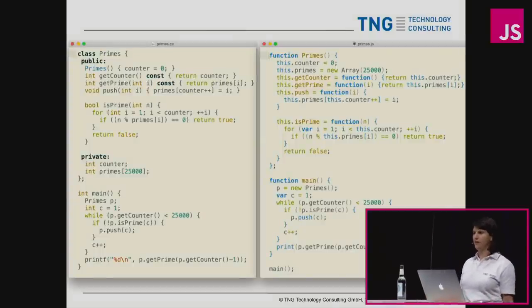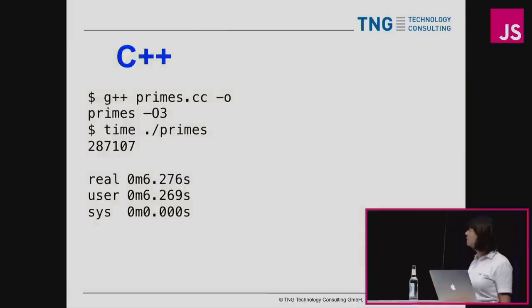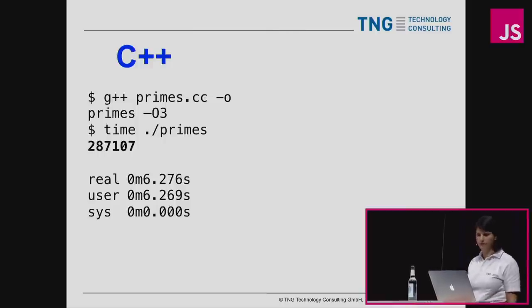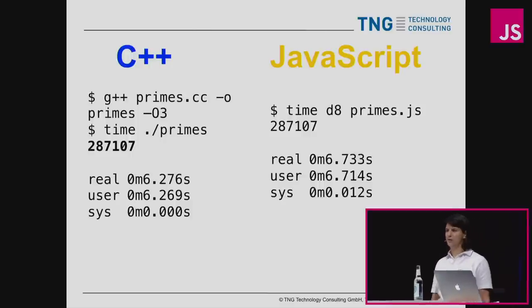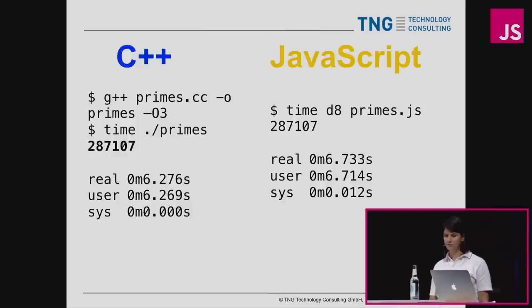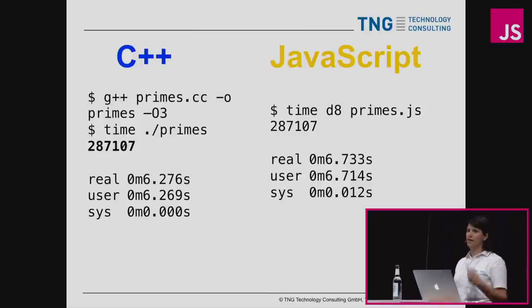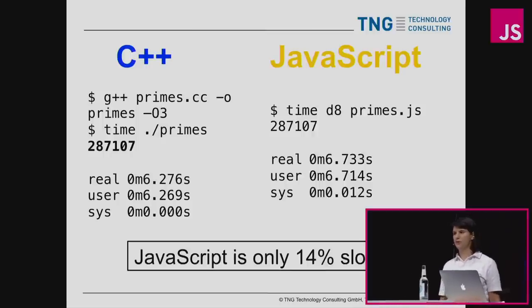On the left you have C++, on the right you have JavaScript. You don't need to read through the algorithm — it's fairly short, fits on a page, and the C++ and JavaScript code do the same thing with the same algorithm. When I run this with C++, it prints out the 25,000th prime number to verify correctness, and it took a little bit over six seconds — 6.2 seconds. I ran the JavaScript version using D8, the debugging shell for V8. I get the correct answer, and it's barely slower than C++: 6.7 seconds. JavaScript is less than 14% slower than C++.